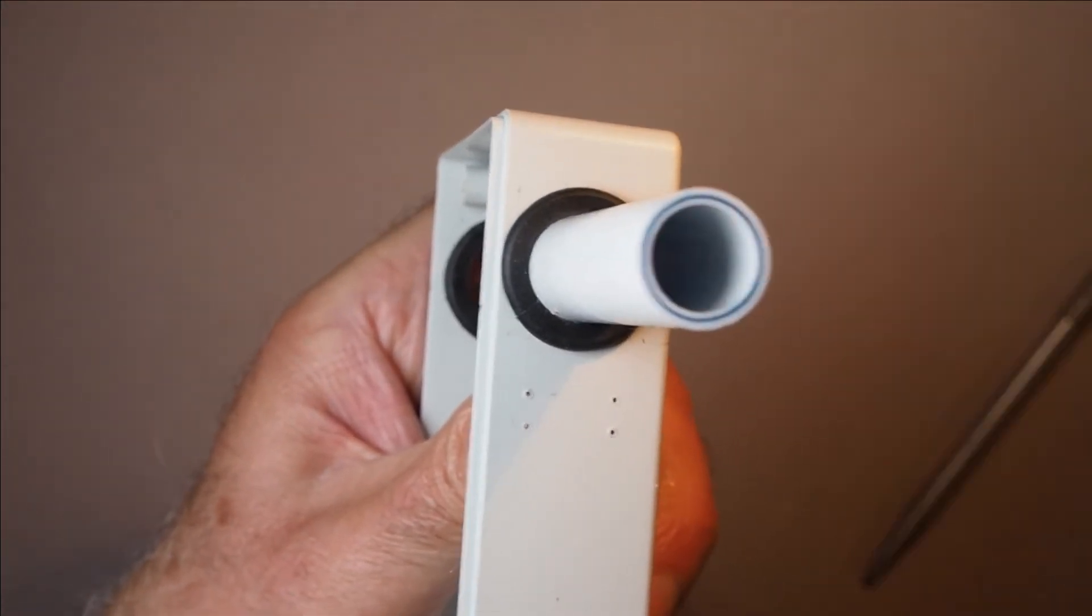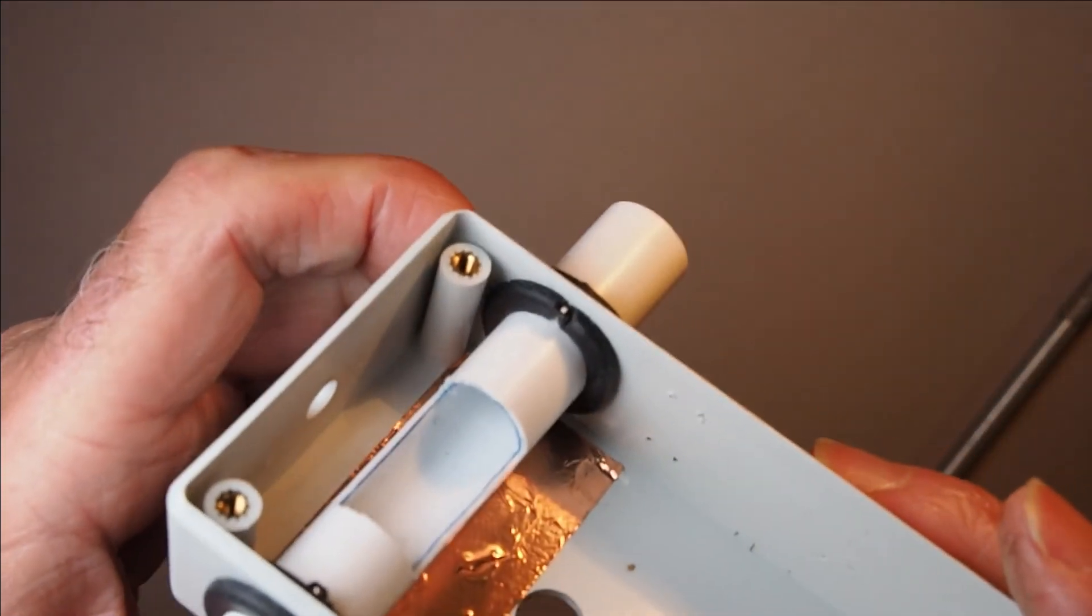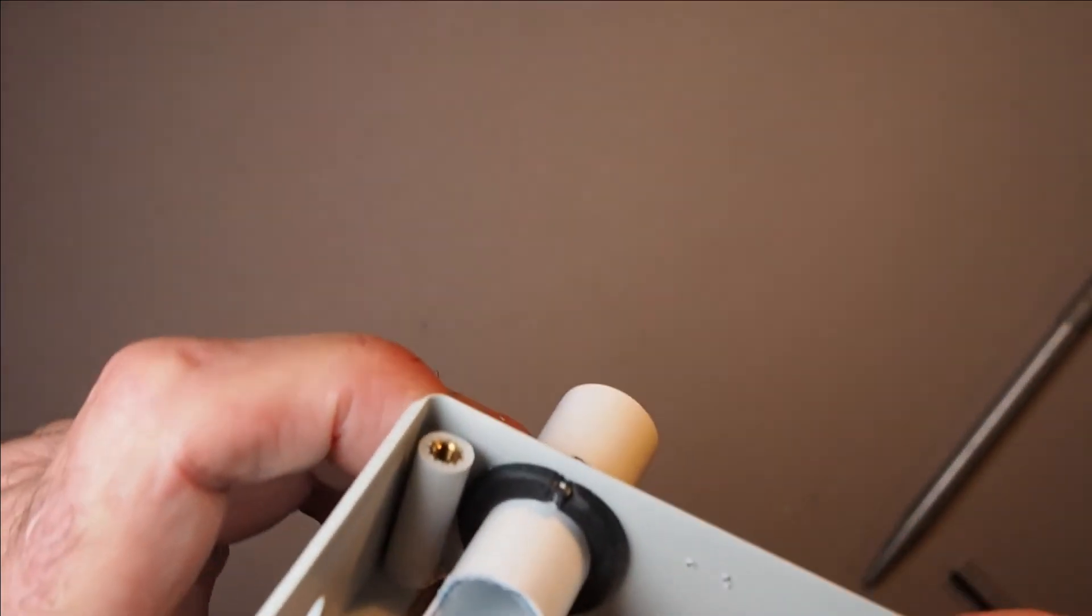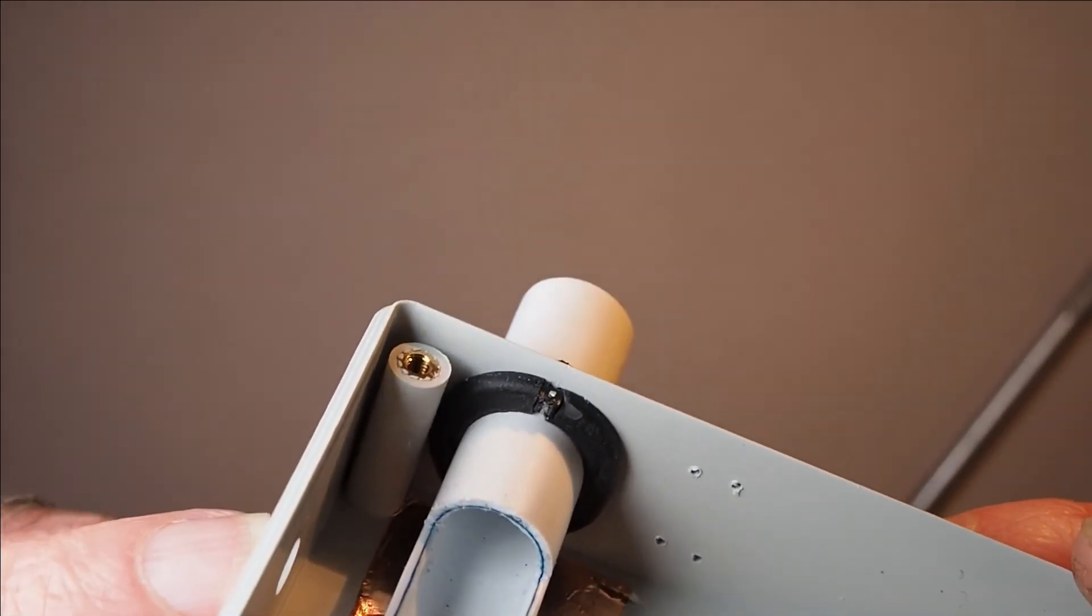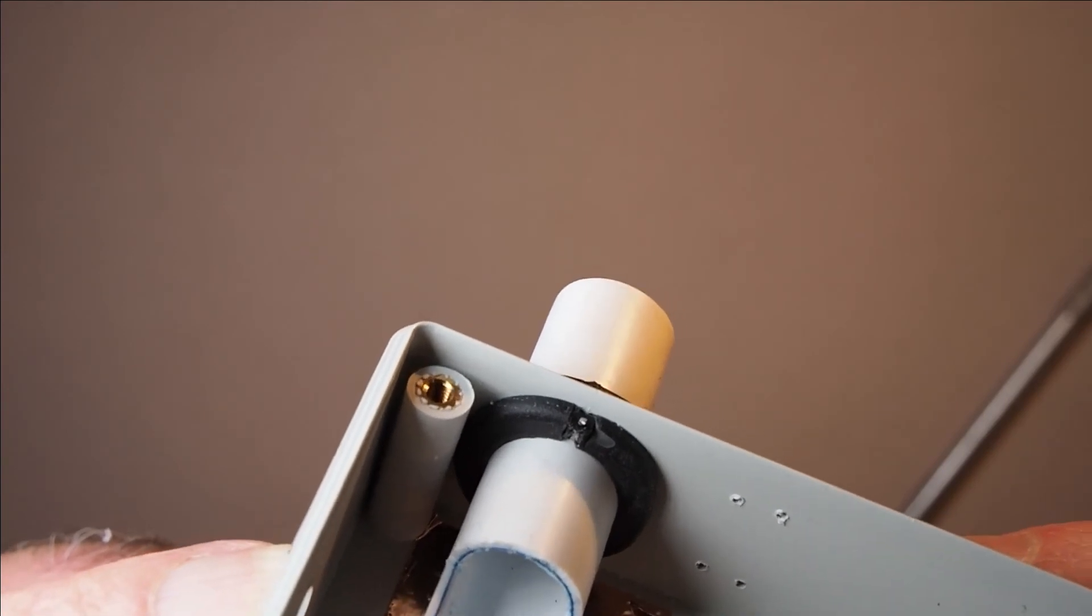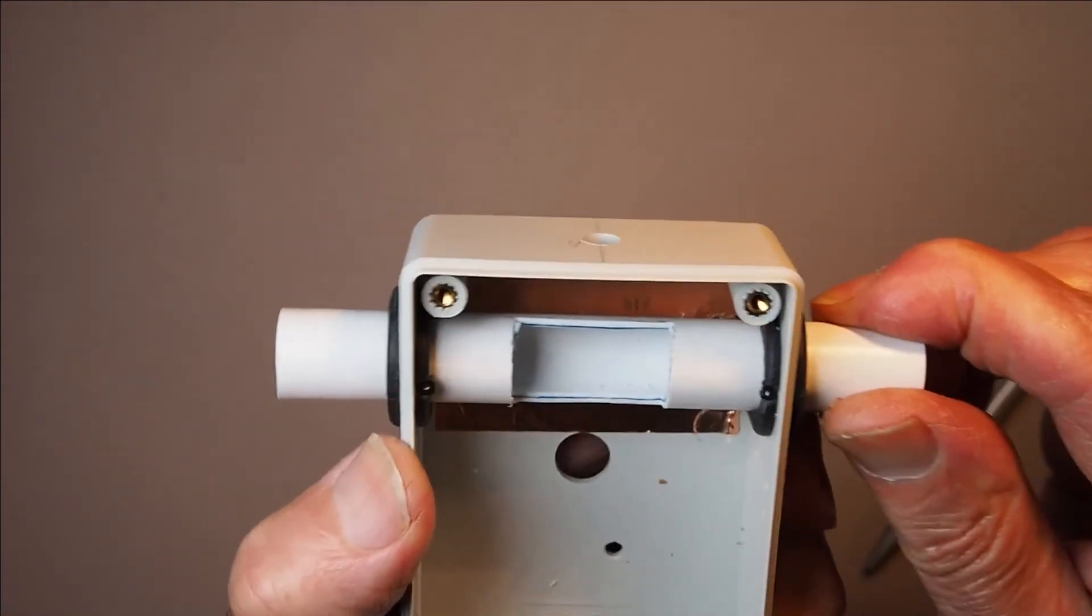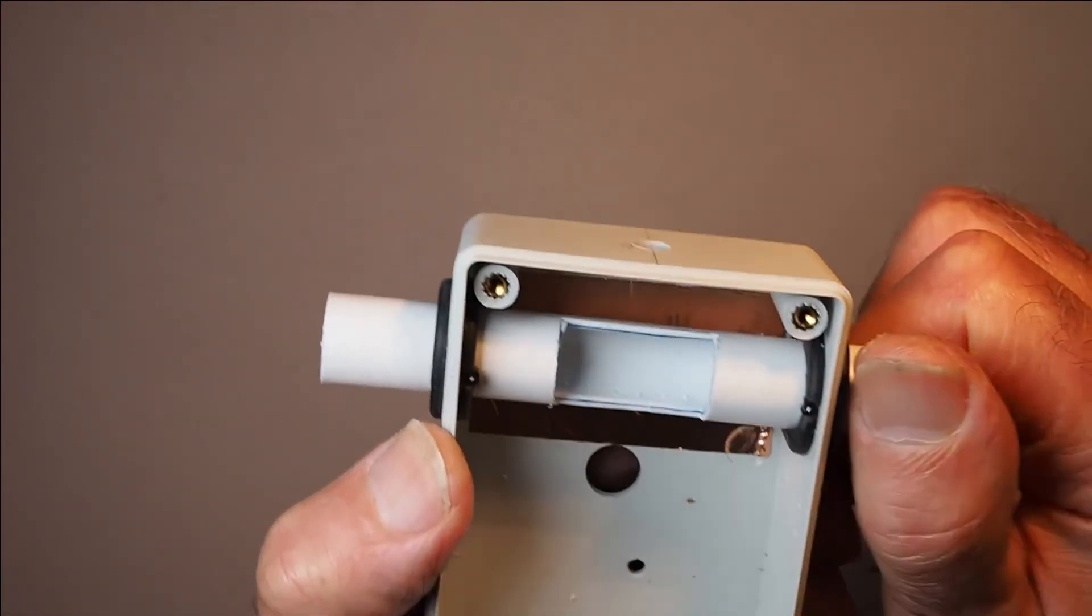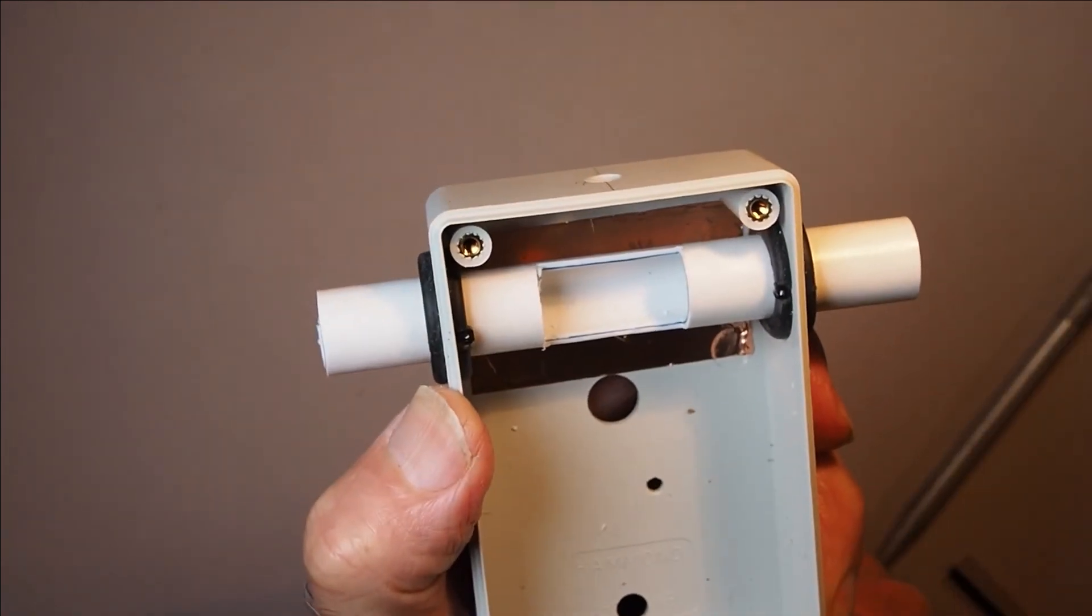You obviously need to trim the length of the pin so that it doesn't project inside the sleeving. So here's an example of one that's completed. You can see that it's well fixed - it won't twist or slip.